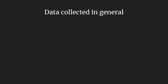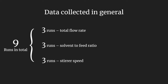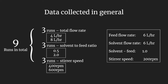In this mixer-settler, we conducted 9 runs of the experiment, which include 3 runs with different total flow rate, 3 runs with different solvent to feed ratio, and 3 runs with different stirrer speed. Among these runs, they share a common standard for comparison, which is run number 2 in the total flow rate: feed flow rate of 6 L/hr, solvent flow rate of 6 L/hr, solvent to feed ratio of 1, and stirrer speed of 200 RPM. The variables used are 4 L/hr and 8 L/hr of feed and solvent flow rate, 0.5 to 2 solvent to feed ratio, and 400 and 600 RPM stirrer speed.